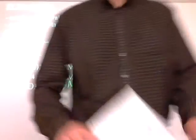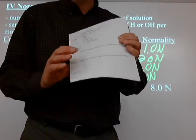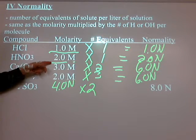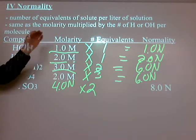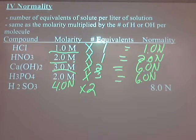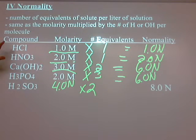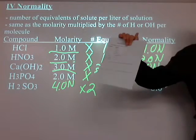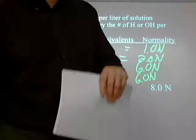Pretty simple stuff. How can I make this harder? In the worksheet, the bottom two are word problems. I don't tell you the molarity — I say you have 20 grams of HCl dissolved in a certain number of milliliters. What do you do? Calculate moles per liter — find the molarity first, then multiply by the number of H's or OH's. Only two problems are like that; the rest are in chart form.